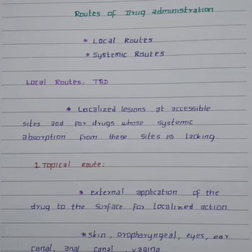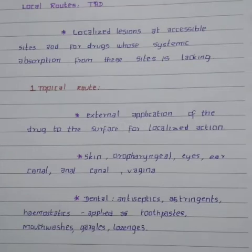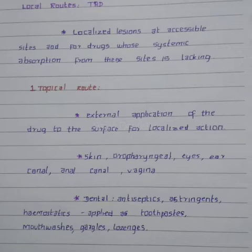Local routes are of three main types: topical route, arterial supply, and the deeper tissues. The topical route is the external application of the drug to the surface for localized action. It is mainly carried out in the skin, oropharyngeal, eyes, ear canal, anal canal, and the vagina.